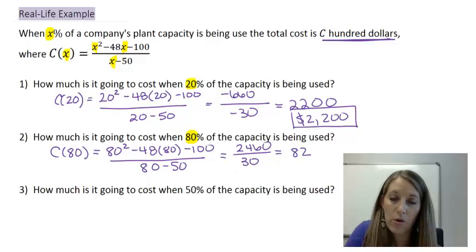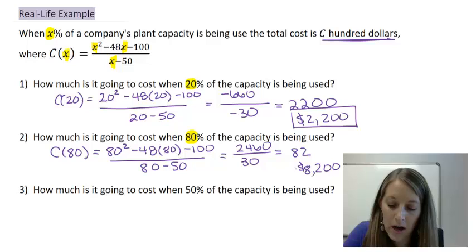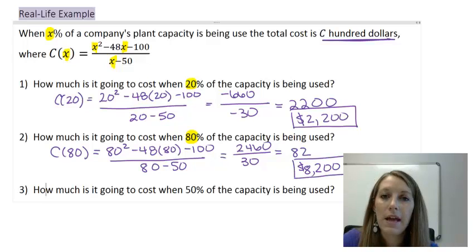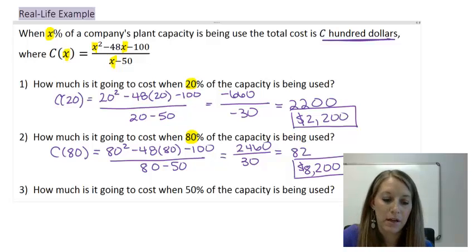If we divide that by the bottom of 30, we get 82. So, if we run our plant capacity at 80 percent, we have to spend $8,200. Because, again, our cost is in hundreds of dollars. So, let's see how much it's going to cost when we run our plant capacity at 50 percent.